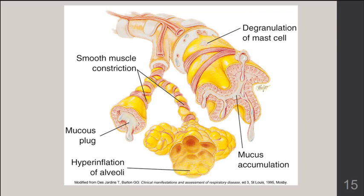The major events of bronchial asthma include mast cell degranulation, mucus accumulation, and formation of a mucus plug, which causes more trouble with exhalation due to its passive nature and because airways are normally narrowed during expiration. Smooth muscle contraction and constriction, individually and collectively, lead to labored breathing and wheezing. Hyperinflation of the alveoli can also occur — when one area is plugged, air takes a different route and over-inflates other alveoli.